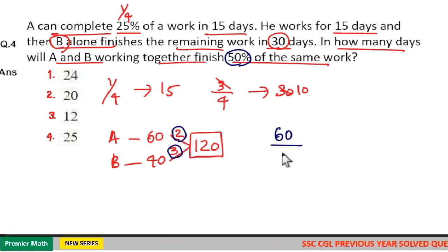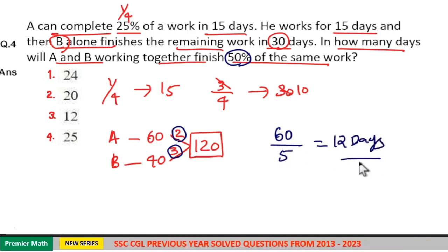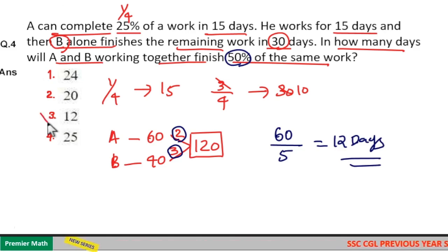And in 1 day A and B can finish 5 units of work. So total number of days to finish 60 units of work is equal to 60 by 5, which is 12 days. Option 3 is your answer.